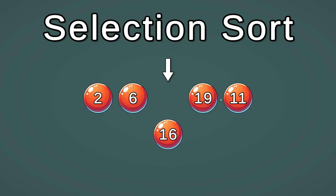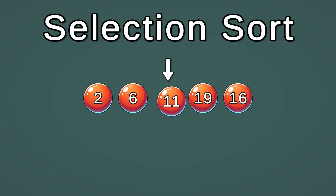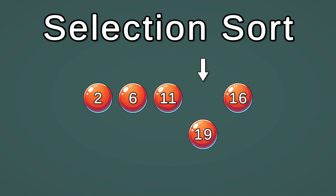16 is smaller than 19, but 11 is smaller than 16, so we swap those two. Now we're down to the last two elements, and 19 is bigger than 16.